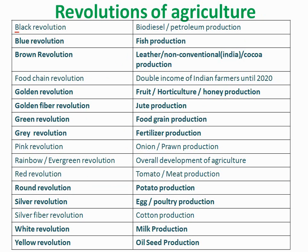Black revolution is related to biodiesel and petroleum production. Blue revolution is related to fish production. Brown revolution is related to leather and cocoa production. Food chain revolution is related to the double income of Indian farmers until 2020. Golden revolution is related to fruit or horticulture and honey production.